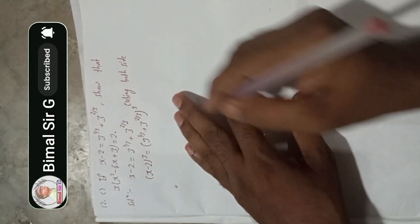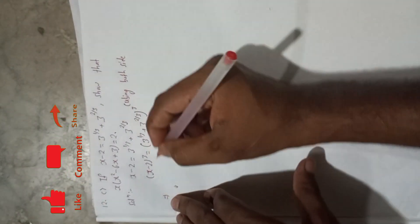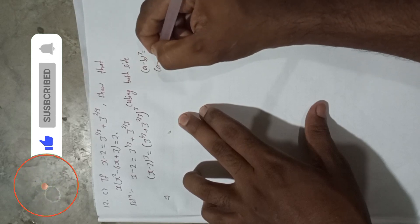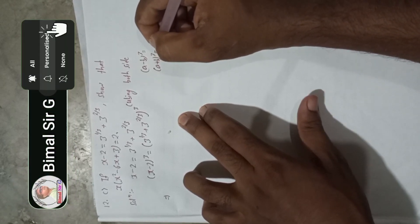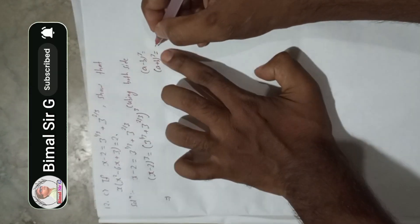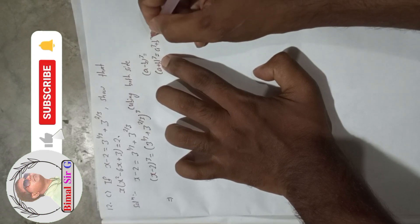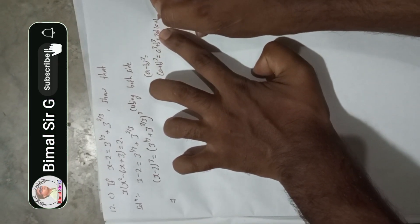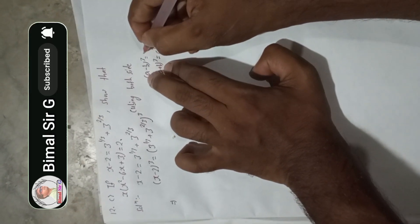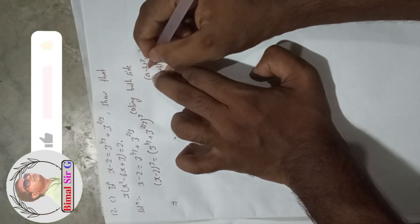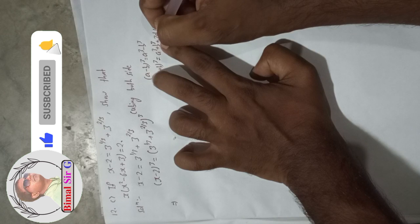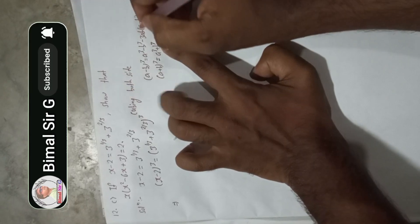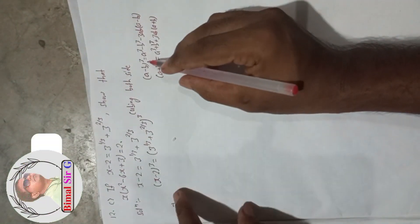Now we have a formula for (a + b)³ and (a - b)³. The formula for (a + b)³ is a³ + b³ + 3ab(a + b). In the same way, the formula for (a - b)³ is a³ - b³ - 3ab(a - b). This is the formula we have to apply here.